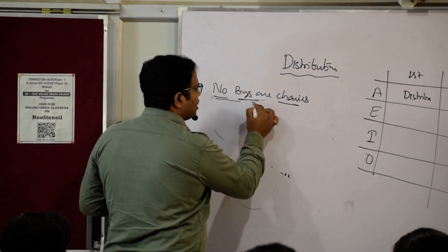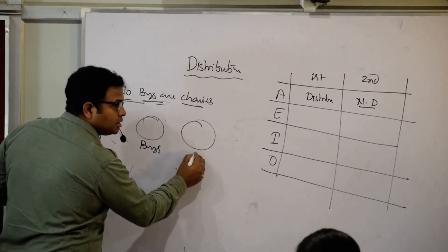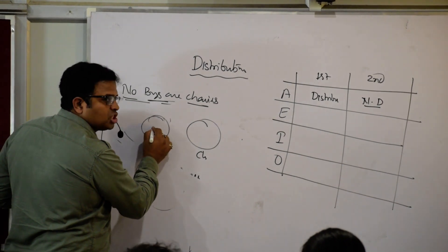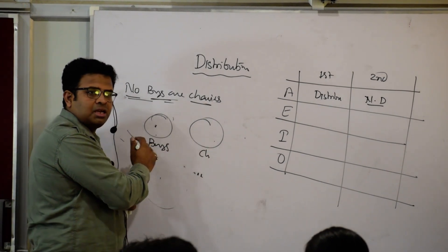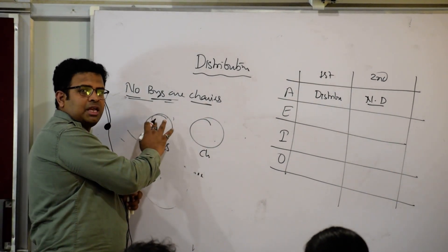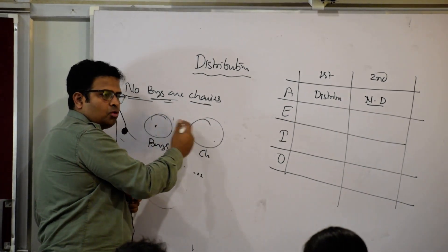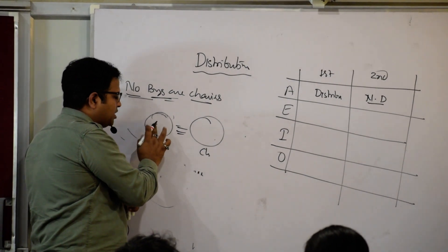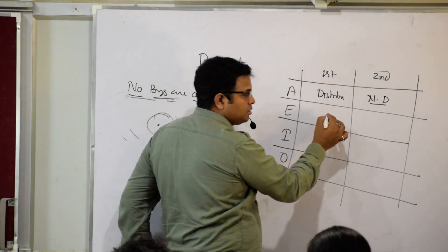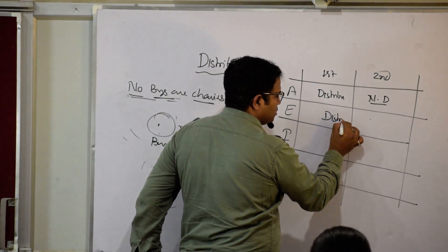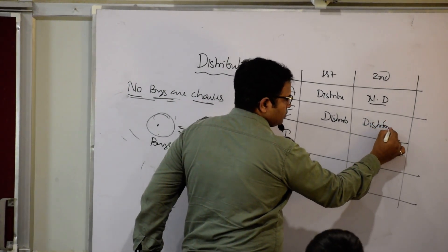No boys are chairs — this means there is zero correlation between boys and chairs. If there is nothing they are correlated with, I can say no boys are chairs, and I can also say no chairs are boys. Both terms are completely zero distributed in each other.